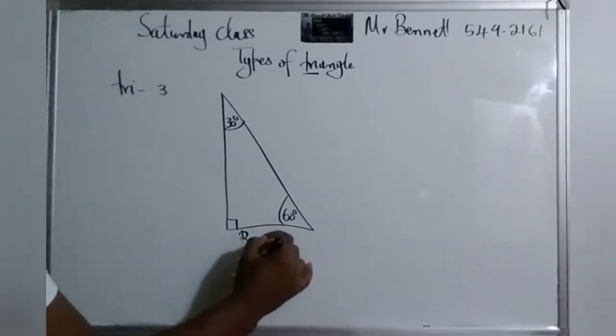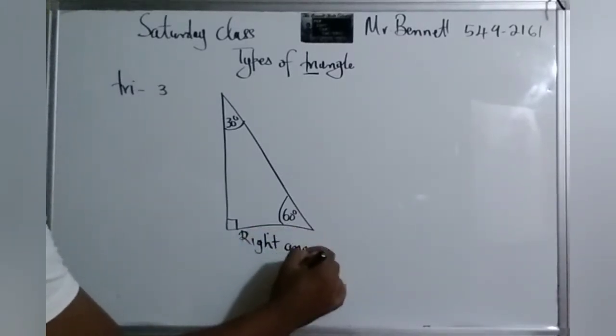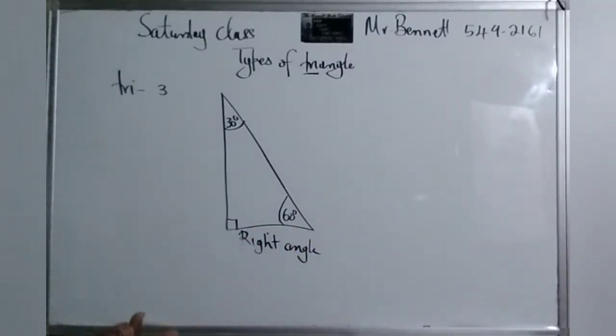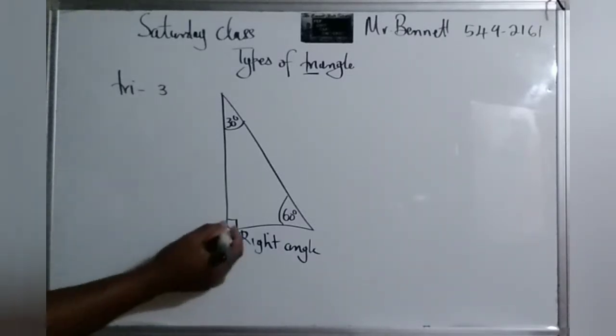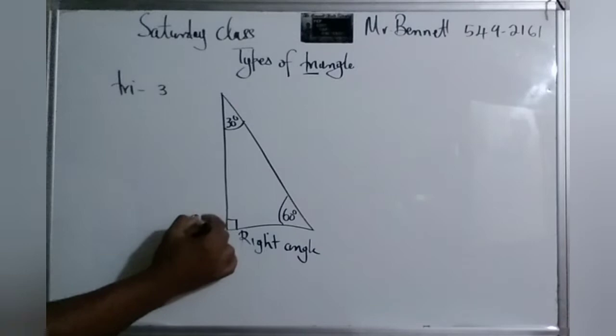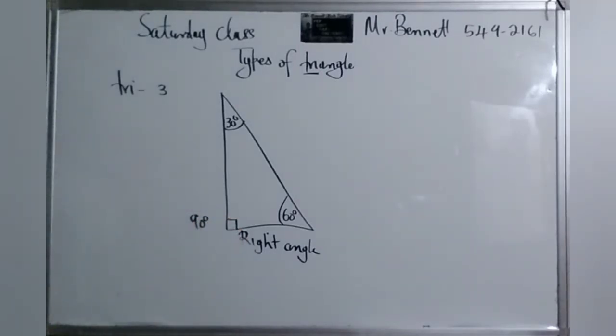So let me look at the types of triangles first. Now why is this called a right angle triangle? It's because what? Because one angle is equal to 90 degrees. So see?